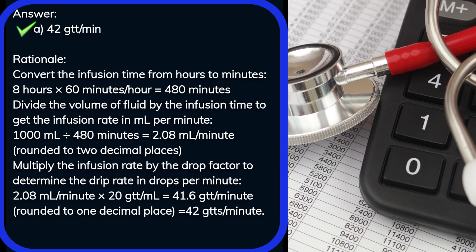Multiply the infusion rate by the drop factor to determine the drip rate in drops per minute. 2.08 milliliters per minute times 20 gtt per milliliter equals 41.6 gtt per minute, rounded to one decimal place equals 42 gtts per minute.